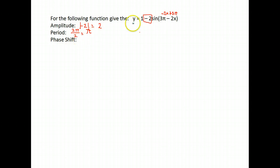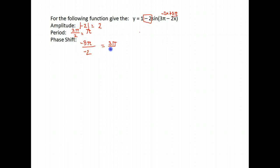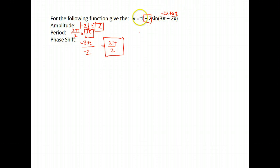Finally, for our phase shift, we take the number added to the end with our x — 3π in this case — use the opposite sign, writing negative 3π, and divide by the number in front of our x, which was negative 2. Negative divided by negative gives us a positive 3π/2. So this graph will be shifted 3π/2 units to the right. Its period is shortened to π, and it has an amplitude of 2. It will also be reflected over the x-axis and shifted upward.